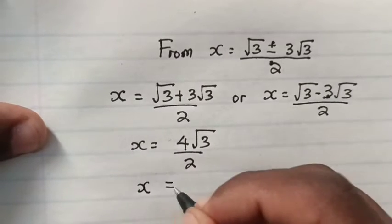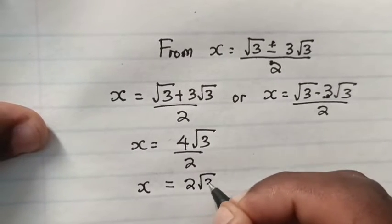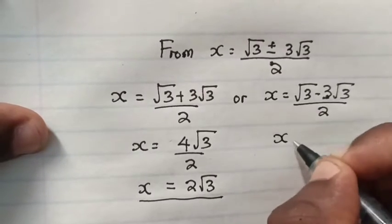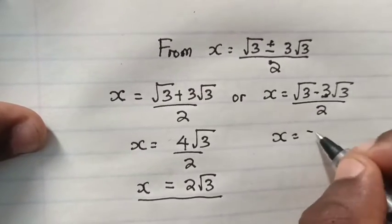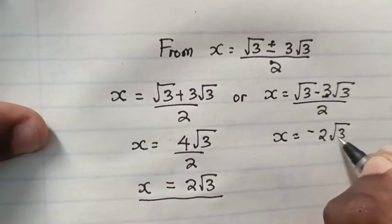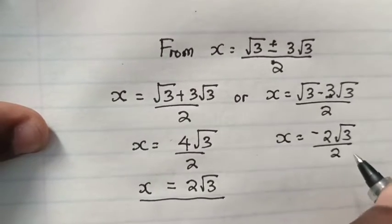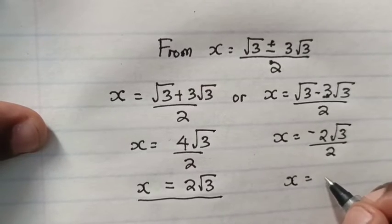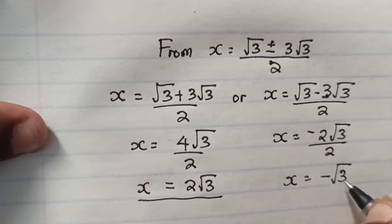So x equals — when we add — 4√3 divided by 2, which gives x equals 2√3. This is our first answer. Or x equals — when we subtract — minus 2√3 divided by 2, which gives x equals minus √3. This is our second answer. Please subscribe to get notified of new videos, and drop a like if you liked it. It's been Teacher Goo — I'm out, peace!